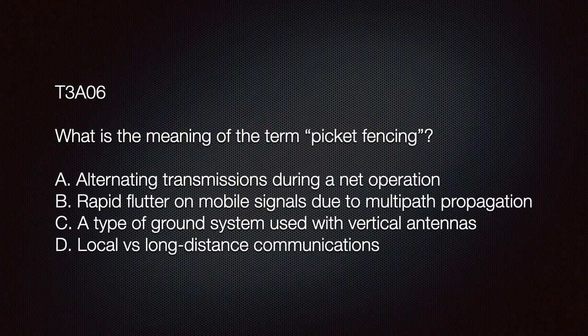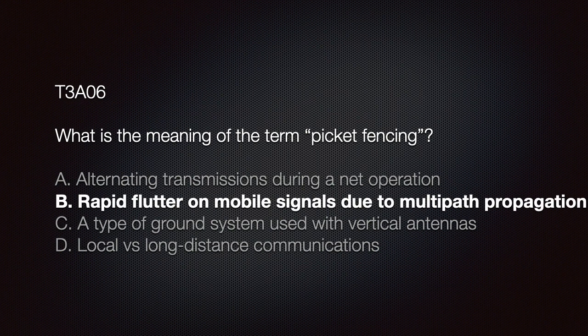The exam question: What is the meaning of the term picket fencing? Options: A — alternating transmissions during a net operation; B — rapid flutter on a mobile signal due to multi-path propagation; C — a type of ground system used with vertical antennas; D — local versus long-distance communications. The answer is B: rapid flutter on a mobile signal due to multi-path propagation.